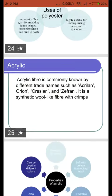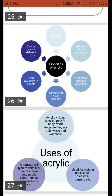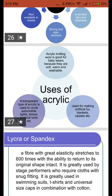Acrylic fibers are also sold under different trade names such as Acrilan and Zephyr. Acrylic is a semi-synthetic wool. For example, the winter inners we wear are often made of acrylic fibers. It is cheaper compared to wool and is very wrinkle resistant.